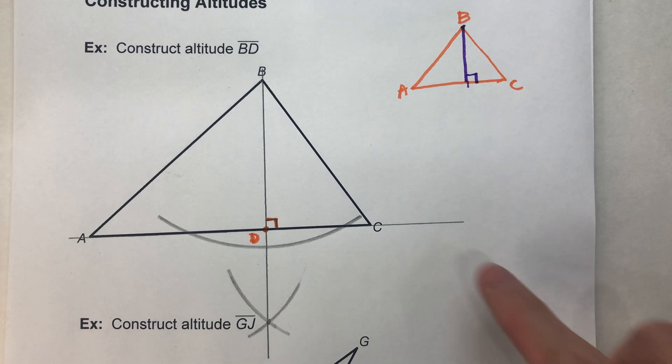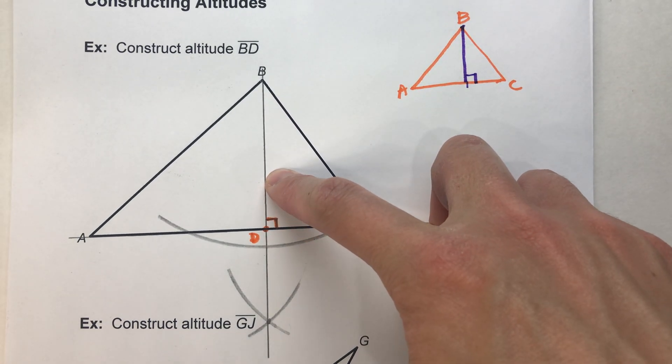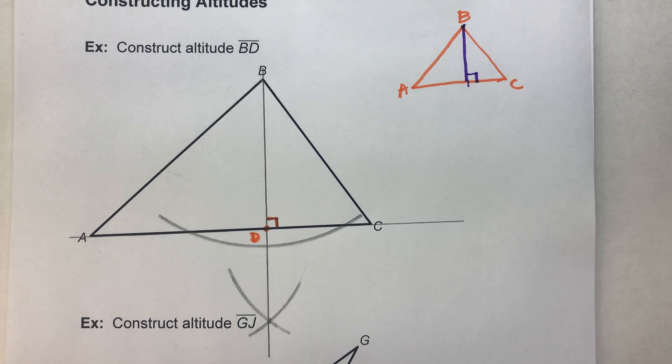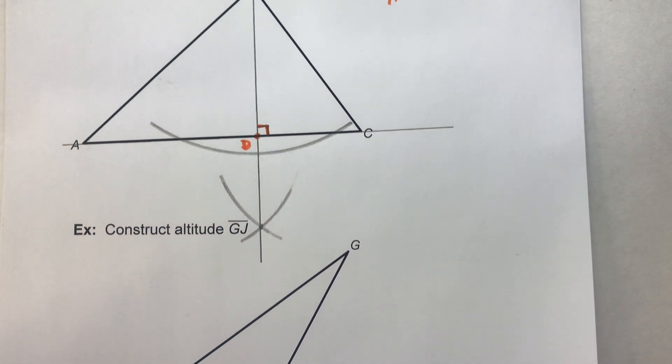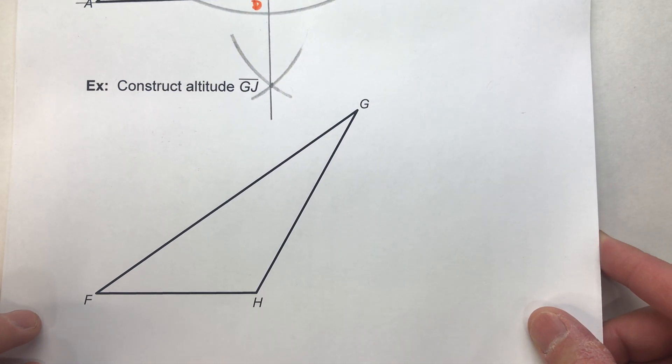Now notice this altitude is inside of the triangle. It's not always going to be inside the triangle. So that's why I have a second example for you.